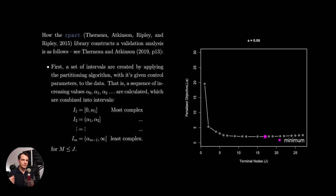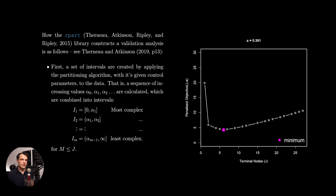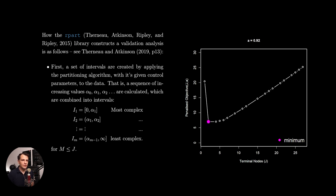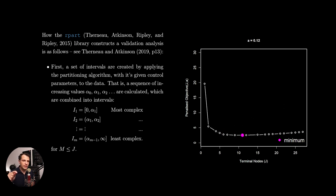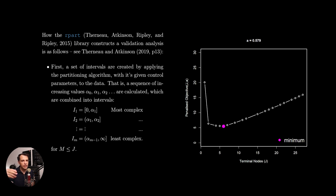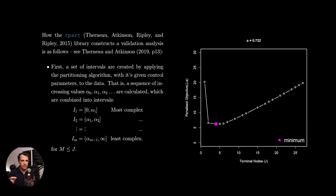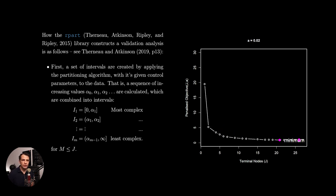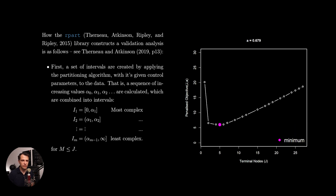How the rpart library conducts a validation analysis is as follows. First, a set of alpha values are calculated which correspond to the change points in the number of leaf nodes that minimize the penalized objective function. That is, a set of increasing values — alpha naught, alpha 1, alpha 2, etc. — are calculated by applying the partitioning algorithm to the full dataset. These values are combined into successive intervals I1, I2, etc., corresponding to tree configurations of decreasing complexity. The first interval corresponds to an unconstrained tree, the second to a more constrained tree, and so on.